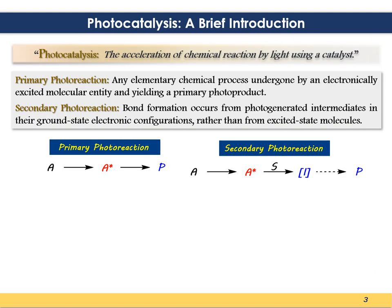Before going into much detail, I will give you a brief introduction about catalysis. Photocatalysis is nothing but the acceleration of a chemical reaction by light using a catalyst. The catalyst will activate the molecule in presence of light and facilitate the reaction. There are two different kinds of photo reactions: the first is the primary photo reaction, which is the elementary chemical process that happens when an organic molecule absorbs light energy and undergoes changes, reaching its excited electronic state. After that, it undergoes chemical transformation through the formation of several intermediates, and these are termed secondary photo reactions.